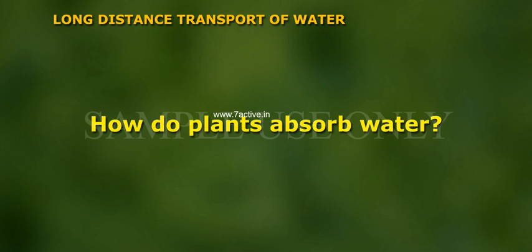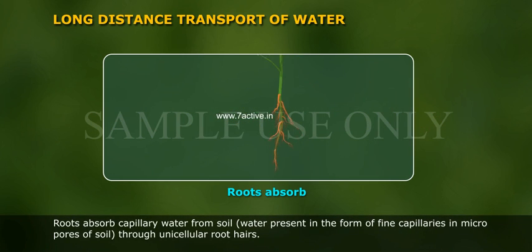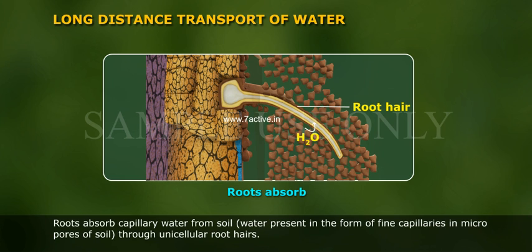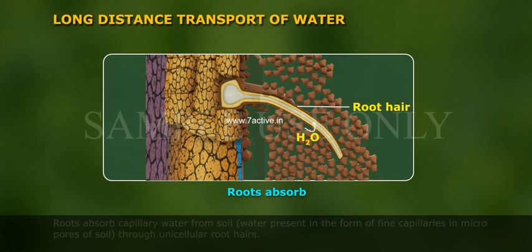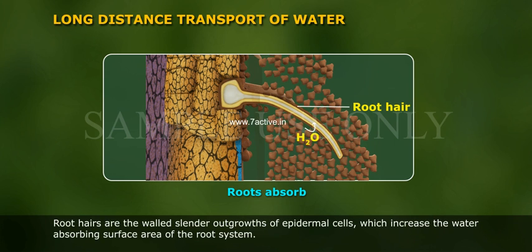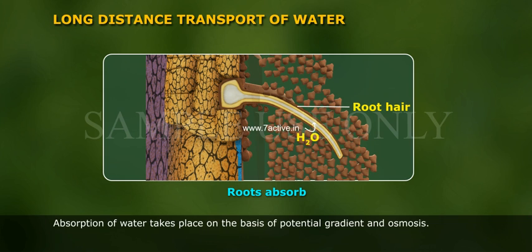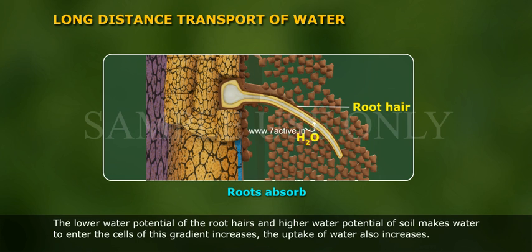How do plants absorb water? Roots absorb capillary water from soil. Water is present in the form of fine capillaries in micropores of soil and is absorbed through unicellular root hairs. Root hairs are thin-walled slender outgrowths of epidermal cells which increase the water-absorbing surface area of the root system. Absorption of water takes place on the basis of potential gradient and osmosis. The lower water potential of the root hairs and higher water potential of the soil makes water enter the cells, and as this gradient increases,